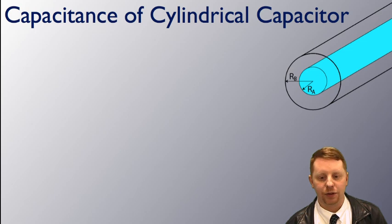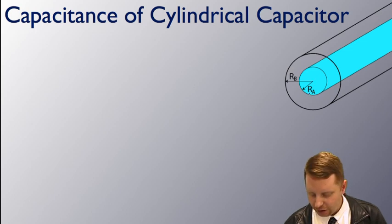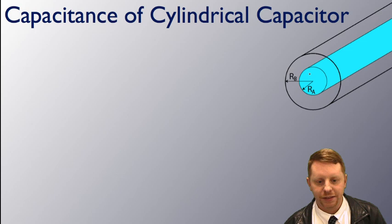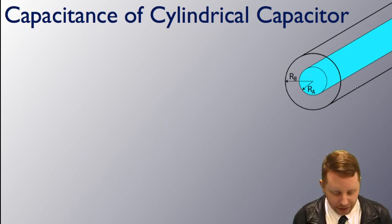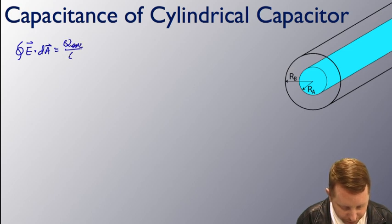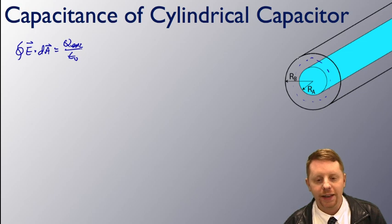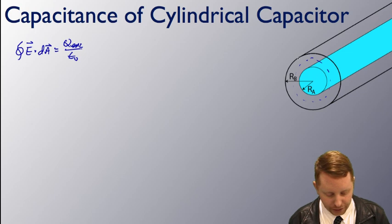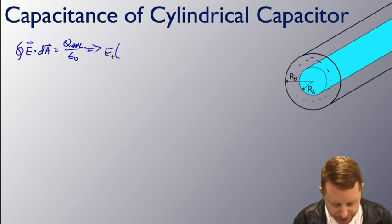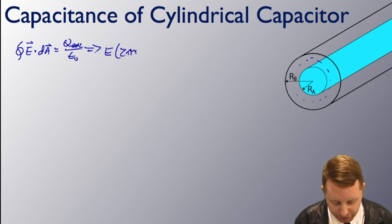Let's find the capacitance of a cylindrical capacitor. Determine the capacitance of a long, thin, hollow conducting cylinder of radius R_b that surrounds a long, solid conducting cylinder of radius R_a. Our first step is to assume a charge of plus Q and minus Q on each, then determine the electric field between the cylinders using Gauss's law. The integral over the closed surface of E dot dA must equal the total charge enclosed divided by epsilon naught, choosing a Gaussian surface between the two cylinders.